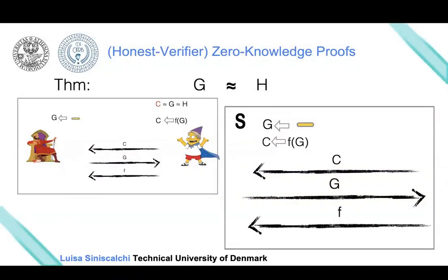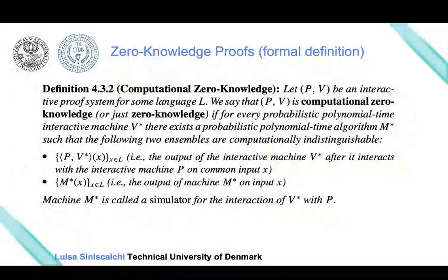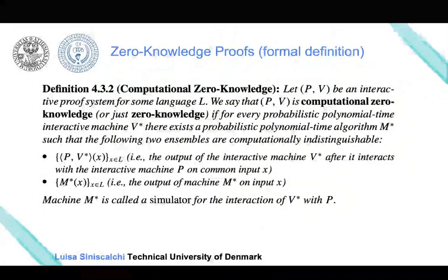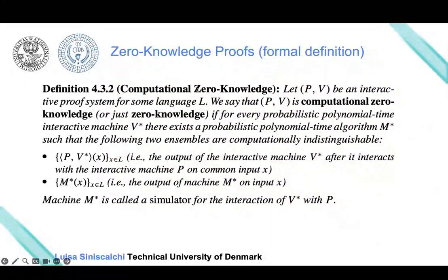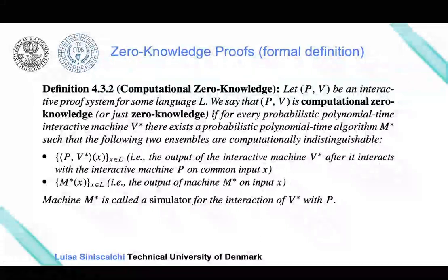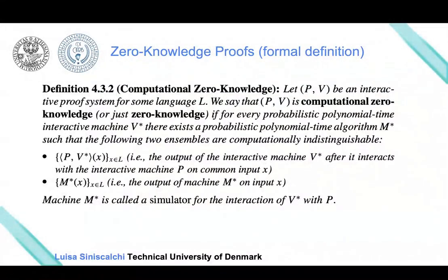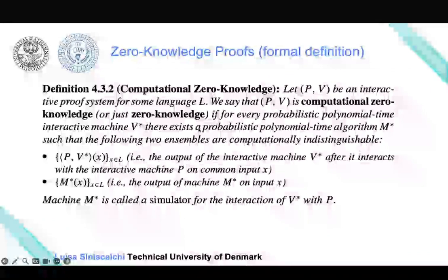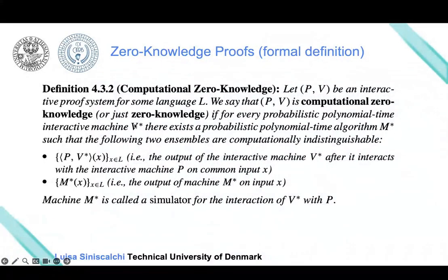Like in the case of interactive proofs, I wanted to give a more formal definition of zero-knowledge. A zero-knowledge protocol is an interactive proof system with the additional property of zero-knowledge. It is still sound and complete, but moreover has this additional property, meaning there exists an expected polynomial time machine that, interacting with the verifier, produces a transcript that looks like a transcript between the prover and the verifier.